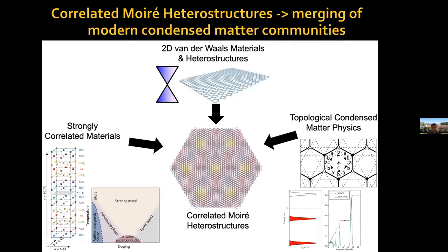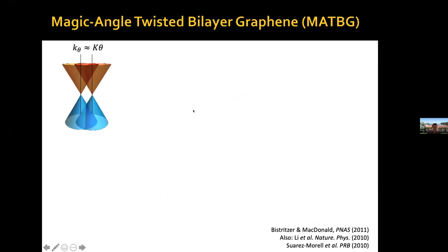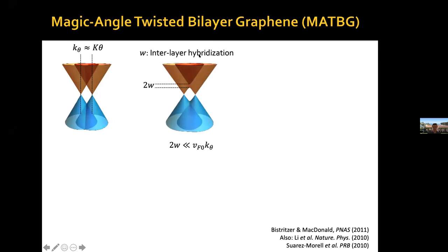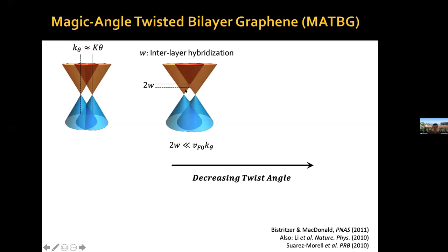Just a reminder: if you put two graphene sheets on top of each other, you have the Dirac cones of each graphene sheet in reciprocal space, separated by some distance proportional to the twist angle for small angles. In reality, these two graphene sheets when stacked are only three ångströms apart, so electrons can tunnel between the layers. This interlayer hybridization opens a gap at the crossing point of the Dirac cones. As you decrease the twist angle, this crossing point moves to lower energy and the lower band gets pushed down further.